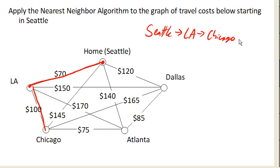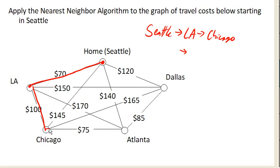Got some good travel deals here. From Chicago, we don't want to go back home yet — we still need to visit Dallas and Atlanta. So we only look at unvisited cities. Of those two, Atlanta is the cheapest, so we'll go to Atlanta next.